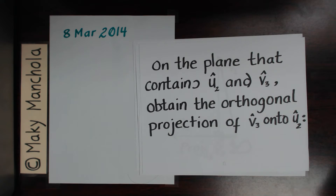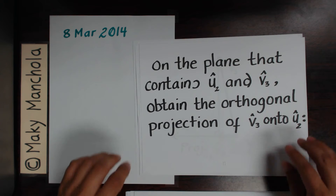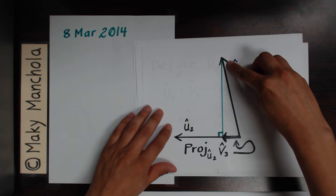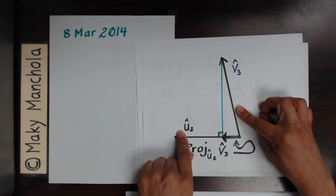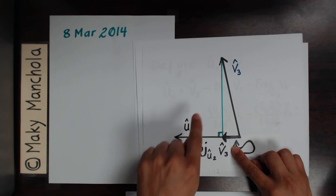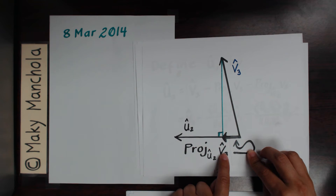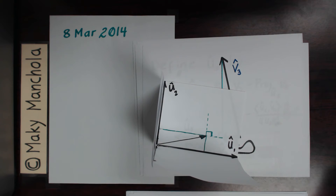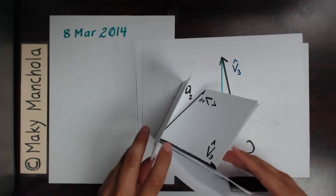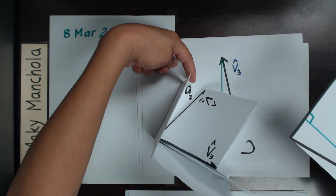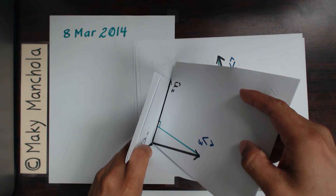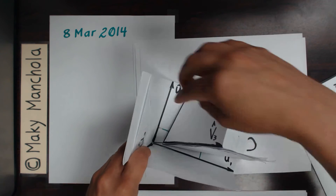Now, on the plane that contains u2 and v3, do something similar: obtain the orthogonal projection of v3 onto u2. Here you have the plane that contains v3 and u2, and the orthogonal projection of v3 onto u2. Going back to the three-dimensional illustration, we can see that we're going to the plane that contains u2 and v3 and obtaining the projection of v3 onto u2, making a little mark there to keep record of that.